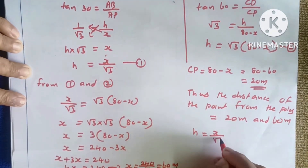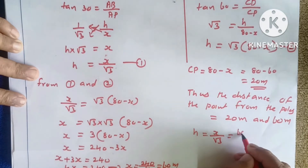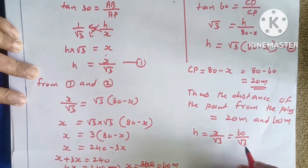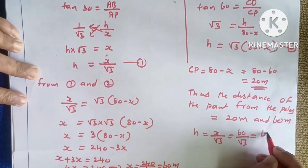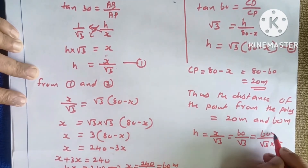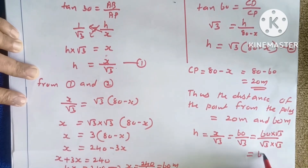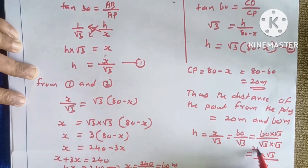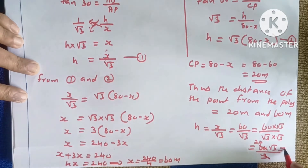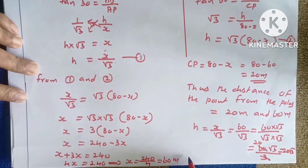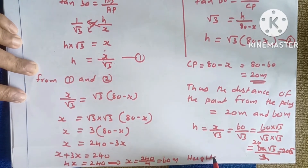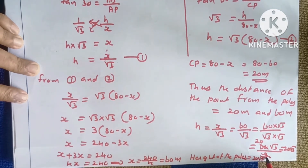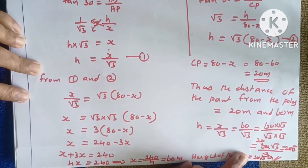Now substituting X equals 60 to find height: H equals X by root 3, which is 60 divided by root 3. Rationalizing the denominator, multiply numerator and denominator by root 3: 60 root 3 divided by 3, which equals 20 root 3. Therefore, the height of the pole is 20 root 3 meters.